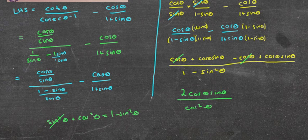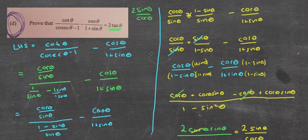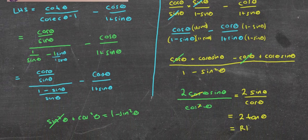Look what's going to happen — this is really nice now. A cos on top cancels a cos on bottom, leaving 2 times sine theta over cos theta. And remember at the top I said that's probably what we'd be looking for — 2 sine theta over cos theta. That equals 2 tan theta, which equals the right-hand side.